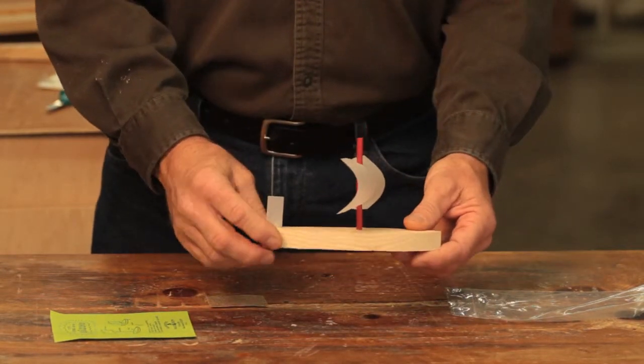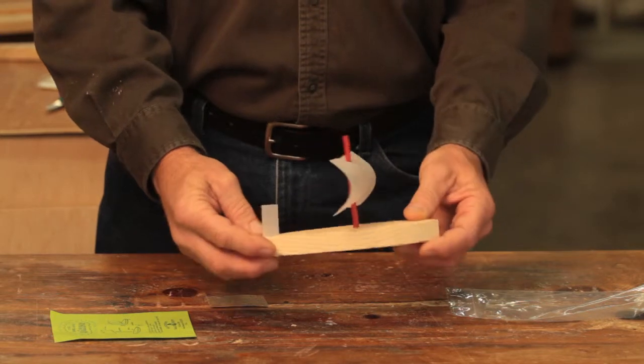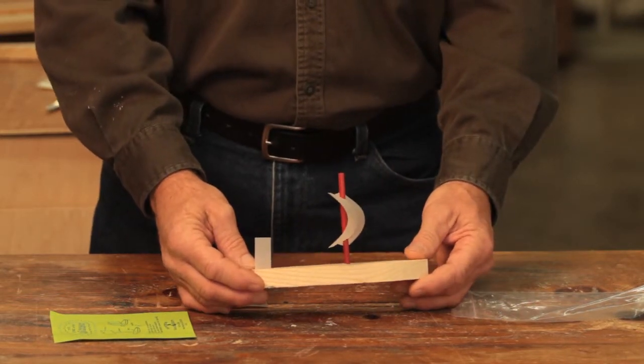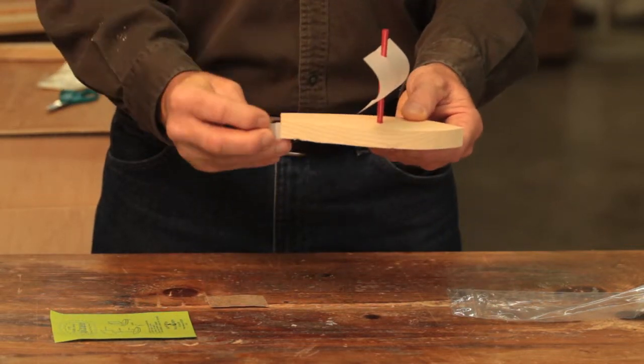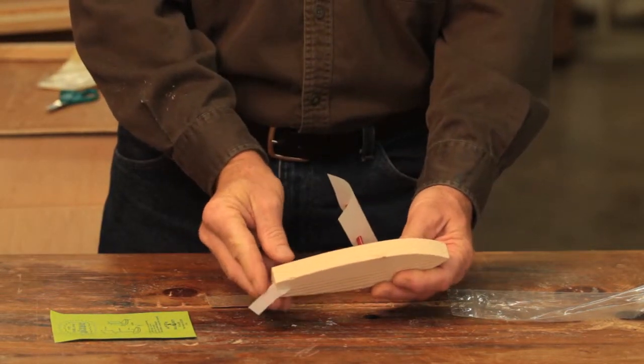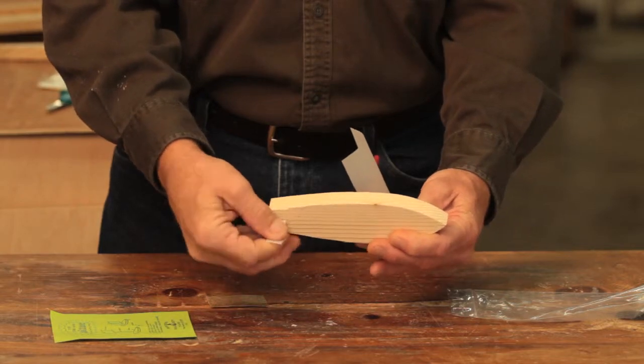The boat is really ready for sailing now but at this point you can take it and decorate it with permanent markers. Once you're all done decorating you can take your boat to the water and before you launch make sure you turn the rudder in the down position just like that. And now you're ready to sail.